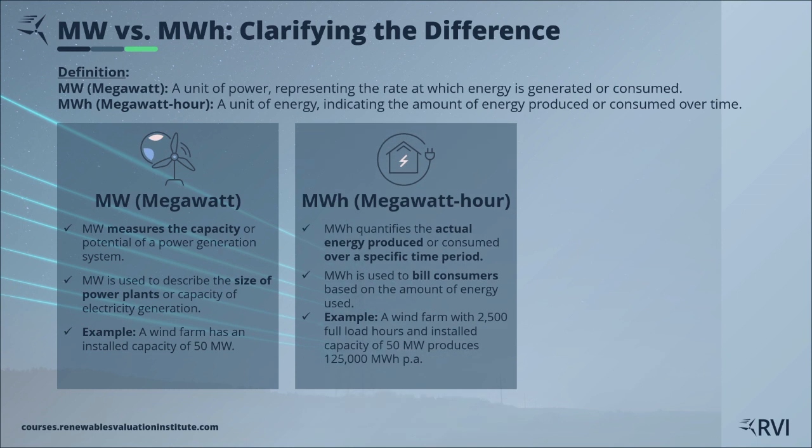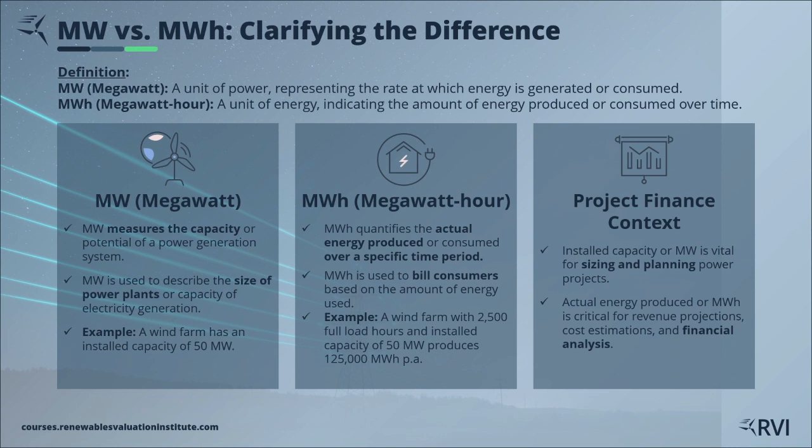MWh, or megawatt hour, is a unit of energy. It indicates the amount of energy produced or consumed over time. Picture it as the total distance traveled by a vehicle. A 1 megawatt hour energy consumption means using 1 megawatt of power for 1 hour.